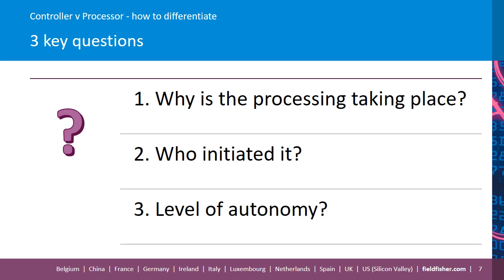When trying to distinguish controllers from processors, there are three key questions that are helpful. The first one is: why is the processing taking place? That will lead you to the purposes of processing, and from that you can look at whose purposes they are. Another question is: who initiated it? More often than not, the party that initiated the processing will be the controller. And thirdly: what level of autonomy do the parties have over the processing of the data? A controller will have autonomy over the processing of information. A processor will either have no autonomy over it, or very little autonomy.